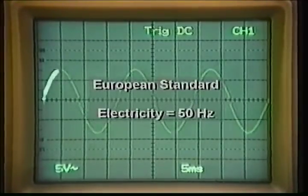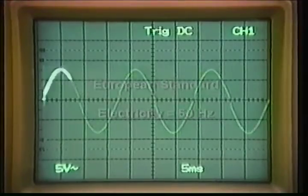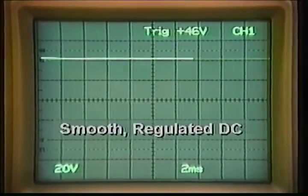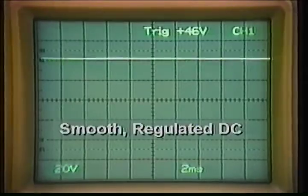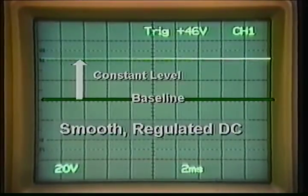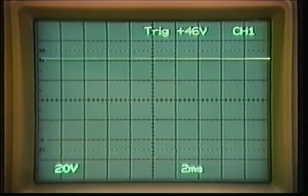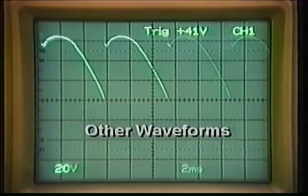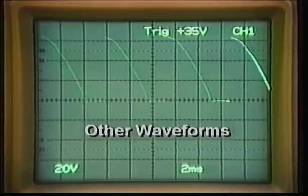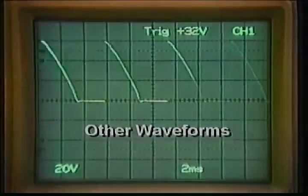50 hertz alternating current is used in most European countries. On the oscilloscope, smooth, regulated direct current looks like a simple flat line, extending at a constant level above the baseline — smooth DC has no waveform. Electricity can also have other waveforms, which we'll talk about as we look at the welding process.